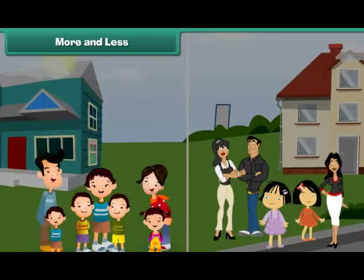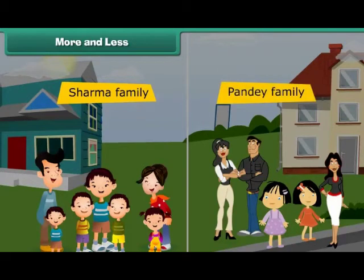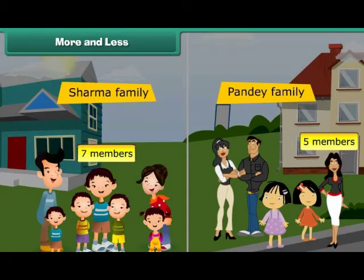Look at these two pictures. On the left is the Sharma family and on the right is the Pandey family. Which family has more members? Sharma family has 7 members and Pandey family has 5 members. Therefore, Sharma family has more members.